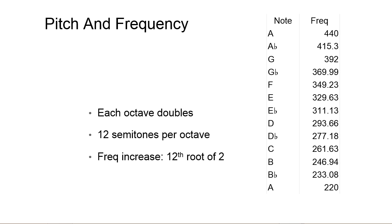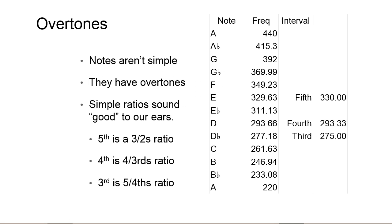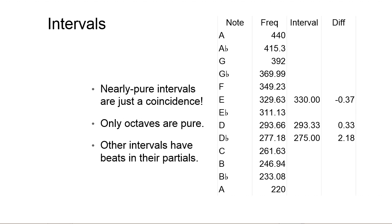There's a lot of cool math and coincidences in music. Every octave doubles in pitch, and they're divided into logarithmically spaced 12-semitone divisions — all the notes in one octave. But those notes are not pure. A note that's supposed to be at 440 Hz is not just 440 — it has overtones which are multiples of the base frequency. When notes have simple ratios between each other, they sound good to our ears.